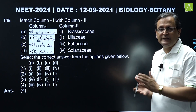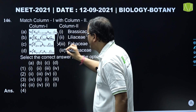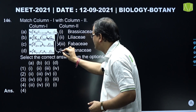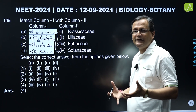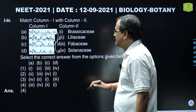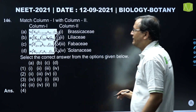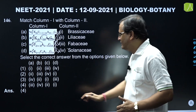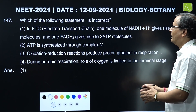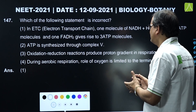Question 146: Match column first with column second - families with their floral formulas. The floral formula given in A belongs to Fabaceae, which is placed at the third number. The floral formula in B belongs to Solanaceae, placed second. The formula in C belongs to Liliaceae, placed second. And D belongs to Brassicaceae, placed first. Based on this analysis, the correct answer for question 146 is the fourth option.